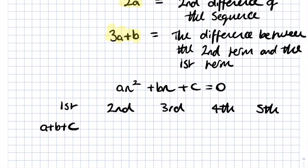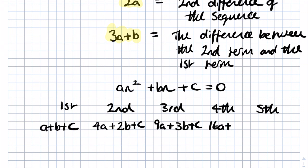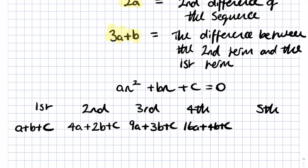The second term is found by substituting n equals 2, giving 4a plus 2b plus c. The third term, substituting n equals 3, gives 9a plus 3b plus c. The fourth term gives 16a plus 4b plus c. And the fifth term gives 25a plus 5b plus c. Those are the first five terms of our sequence.